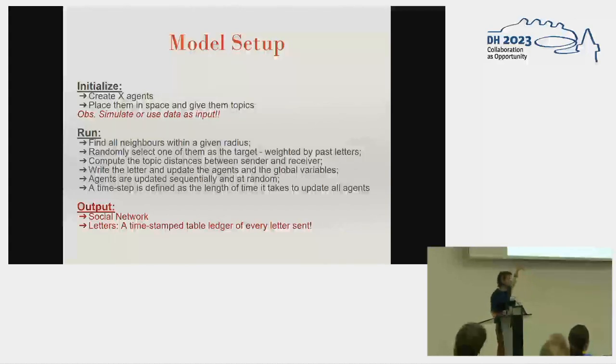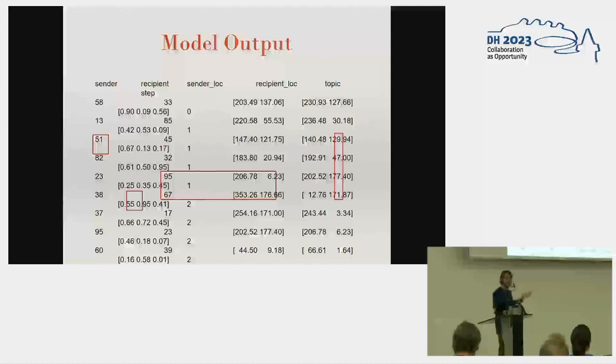After we run this model, we started with 100 agents for 100 time steps and in the end we get a ledger with timestamps. We have information on the sender, recipient, location, the topic, and this is where the pruning comes along because we can use this information to edit which letters we save and preserve in time. We can delete all letters from certain senders or preserve only letters for certain receivers based on topic or time.